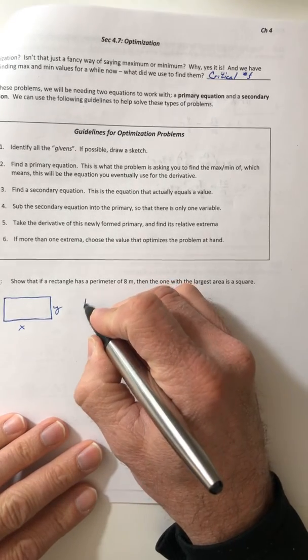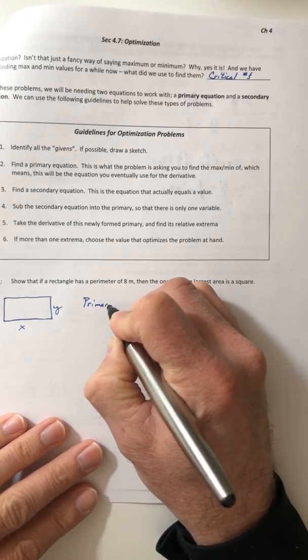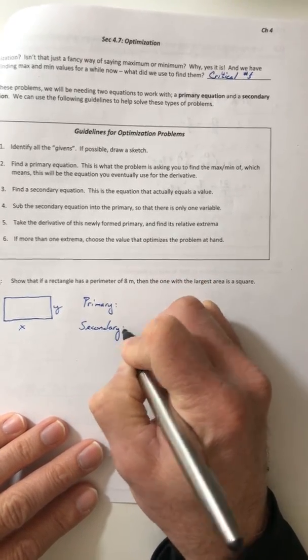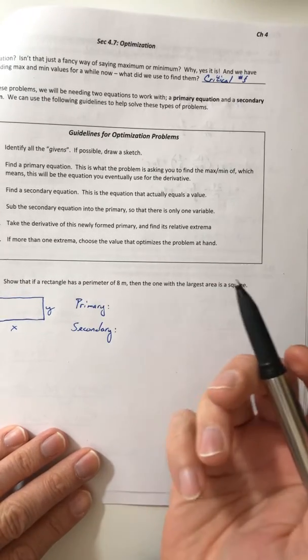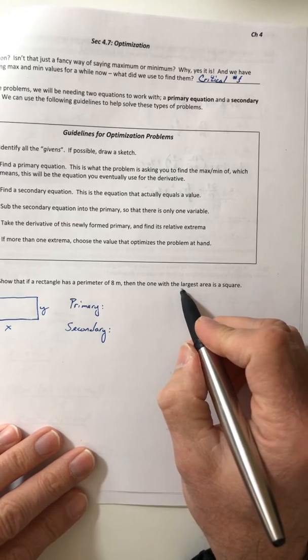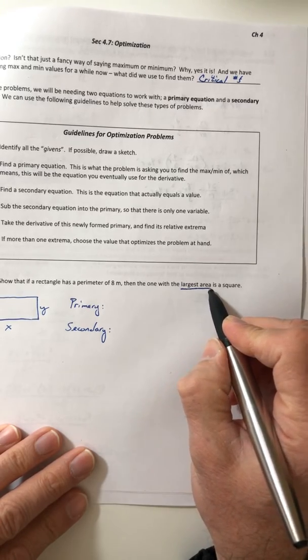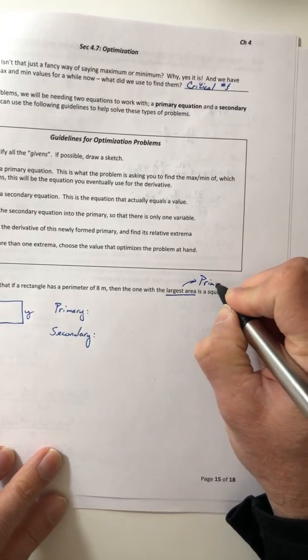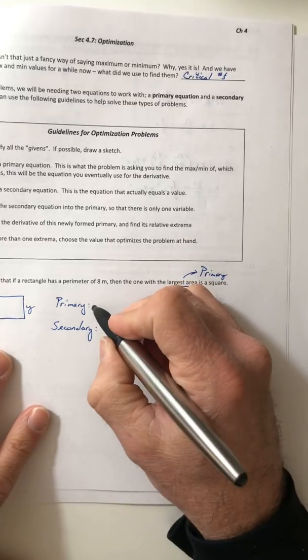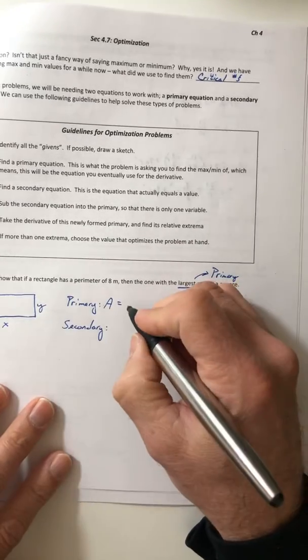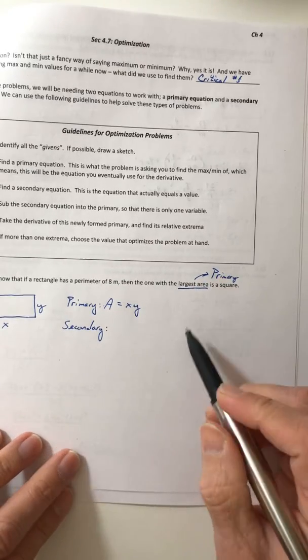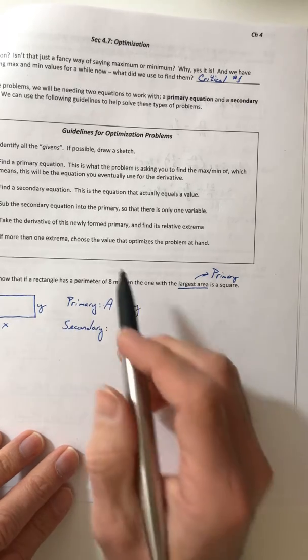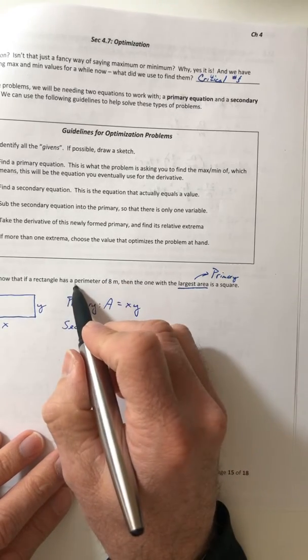We need a primary and a secondary equation. The primary is the thing you want to take the max or min of, so it's asking for the largest area, so that area equation is going to be the primary. Area of your rectangle: A = xy. The secondary is the thing that goes with the number that's actually in the problem. It has a perimeter of 8, so the perimeter of the rectangle is 2x + 2y = 8.